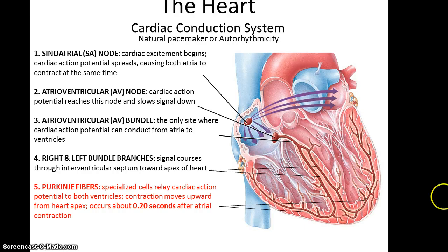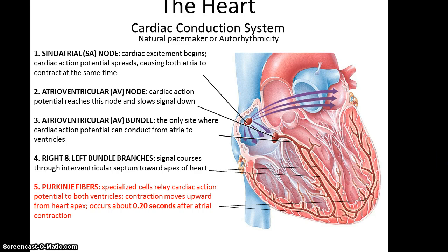The ventricles actually contract starting at the apex of the heart, thereby allowing the blood to be pushed up through the blood vessels, such as the aorta and the pulmonary trunk. The time lapse between the contractions of the atria and the ventricles is basically only 0.2 seconds, so this is all happening extremely rapidly.